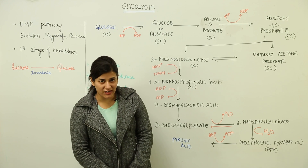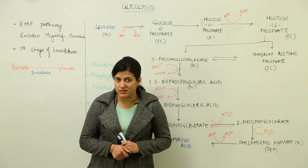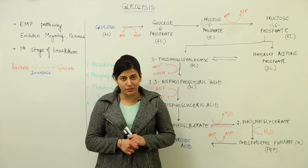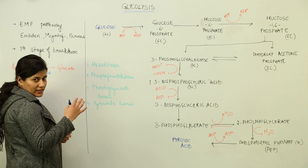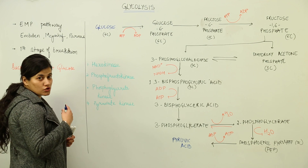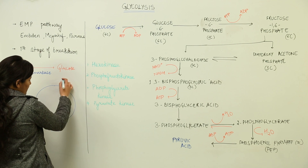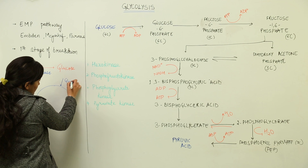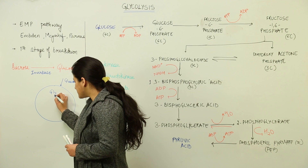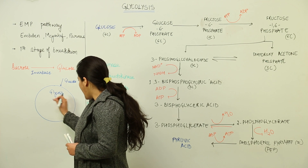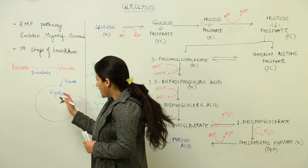Now that you are well acquainted with what respiration actually is, let us see in detail the mechanism of respiration. The points we had discussed involve glycolysis, Krebs cycle, and fermentation if oxygen is not available. We are going to see each step in detail. The respiratory substrate, which is sucrose and is to be broken down, would enter the cell and undergo glycolysis, which every respiratory substrate has to undergo irrespective of whether oxygen is present or not.